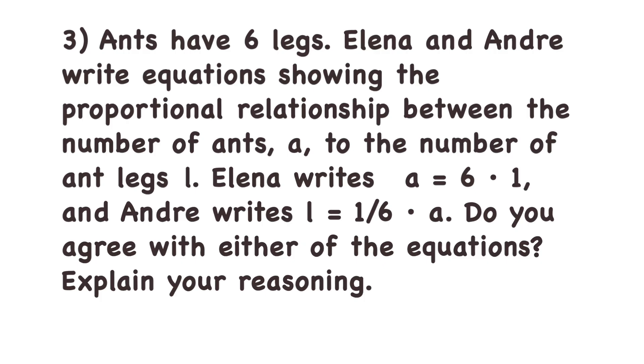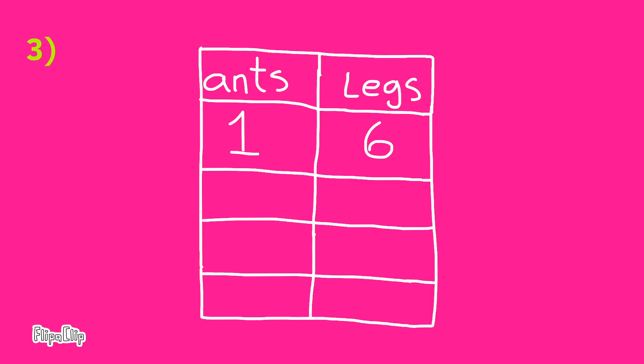Do you agree with either of the equations? Explain your reasoning. With 1 ant, you'd have 6 legs. With 2 ants, you'd have 12 legs. With 3 ants, you'd have 18 legs. For example, if you had half an ant, you'd have half of 6 legs, which would be 3 legs.